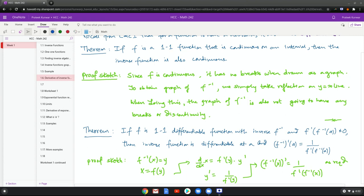Sketch of proof: let f inverse x be y, then x is f of y. I take the derivative remembering implicit differentiation from Calc 1. d/dx of x is f prime y times... so f prime becomes 1 over f prime y.